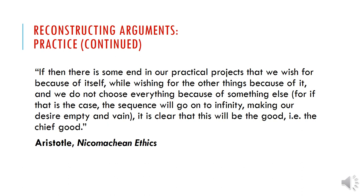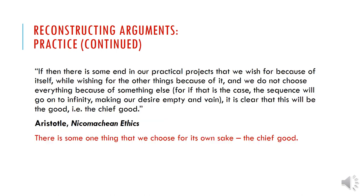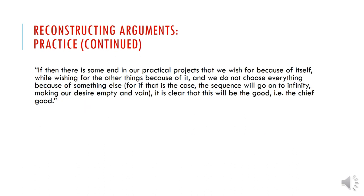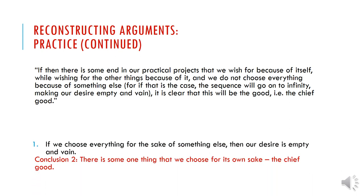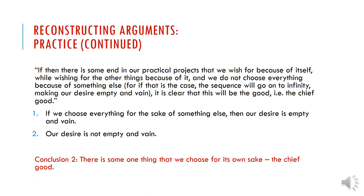Here's another practice. Pause the video now. This argument's conclusion is going to be that there is some one thing that we choose for its own sake — the chief good. The reason, for Aristotle, is that if we choose everything for the sake of something else, then our desire is empty and in vain. Our desire is not empty and in vain — the idea of eudaimonia, or human flourishing and happiness.